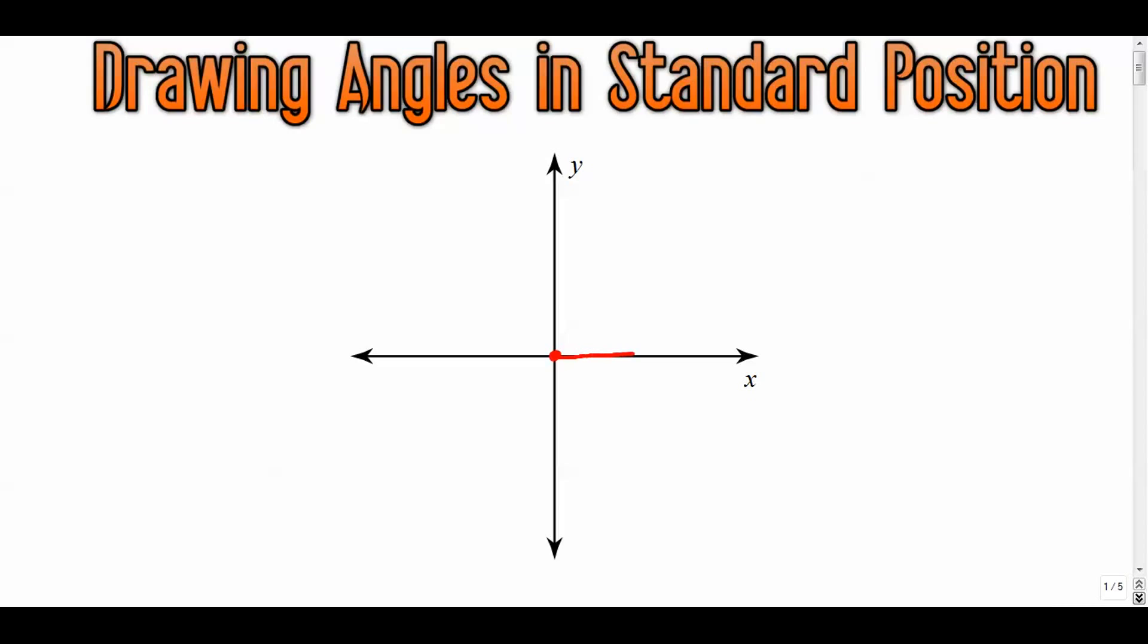We're going to have our origin be our vertex, and the initial ray or initial side of our angle will lie on the x-axis, the positive x-axis.